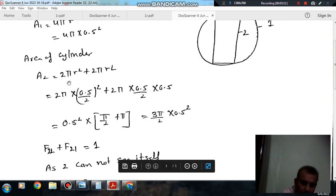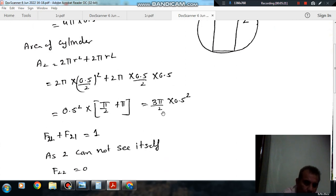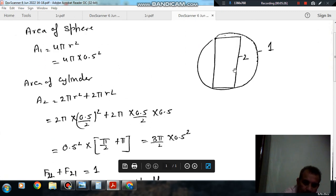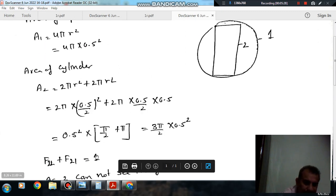Now r is 0.5 by 2 and L is 0.5, so we put the values. So now F22 plus F21 equals 1.